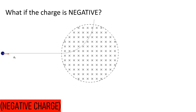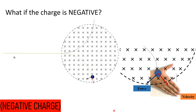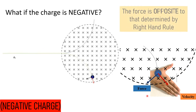What if the charge is negative? For a negative charge, it deflects in the opposite direction. The right-hand rule is still applicable — for a negative charge particle, the force is simply opposite to the direction of the thumb. So this is the direction of force for a positive charge particle, and for a negative particle, it will be opposite to that determined by the right-hand rule.